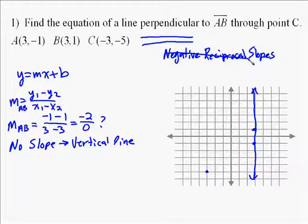And the way you could think about it is negative 2 over 0, if you took the reciprocal, it would be 0 over negative 2, which would be a slope of 0. And horizontal lines have slope 0.